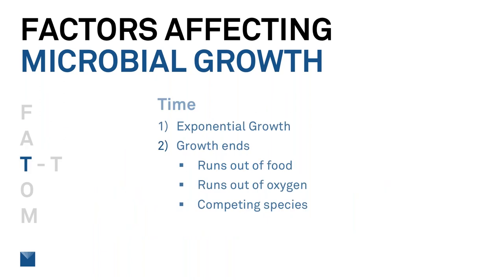Time — microbial growth is exponential. If you have an initial population at time one, by time two it would be doubled, by time three it would be four times, and it would reach 4.3 billion times by time seven. It's really key to stop microbial growth early before it gets out of control. This growth will continue until it runs out of food, oxygen, or there's a competing species vying for the same nutrients.